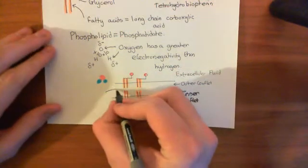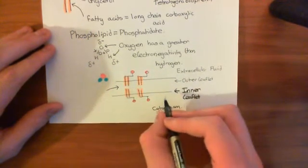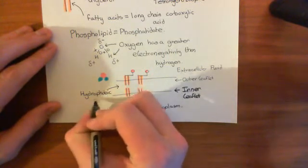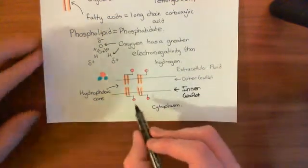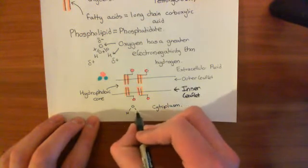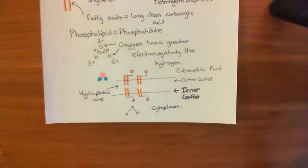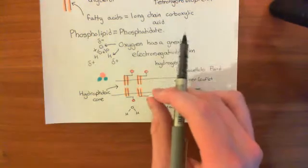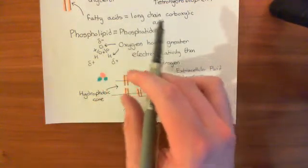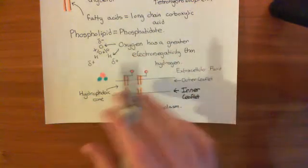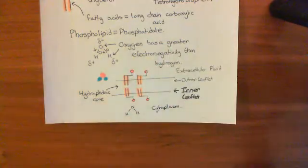The polar heads, which I'll draw in pink, they face out towards the cytoplasm and the extracellular fluid where there is water. There's no water in this hydrophobic core — this is a core consisting of lipid molecules. Whereas there is water in the cytoplasm and in the extracellular space, so they interact with these water molecules, which are also polar. So it's very energetically favourable to form a phospholipid bilayer where the hydrophobic tails are isolated away from water and the polar heads guard against water from the extracellular and intracellular fluid.